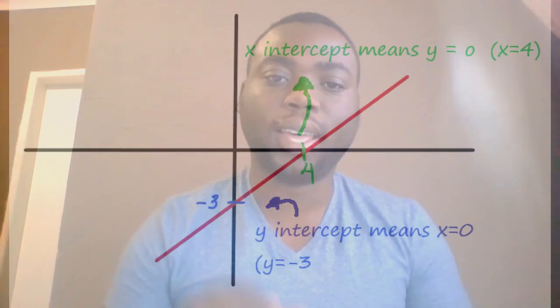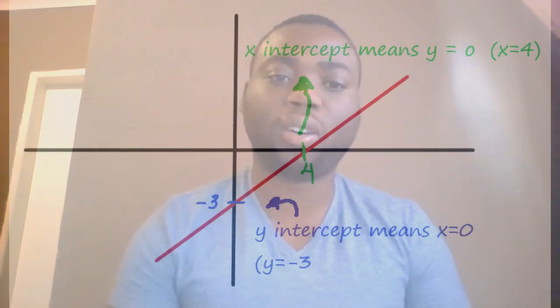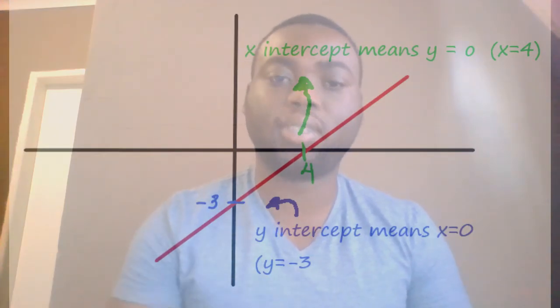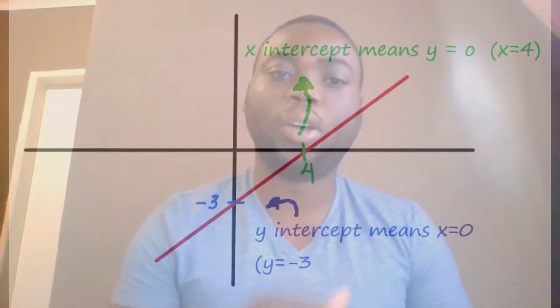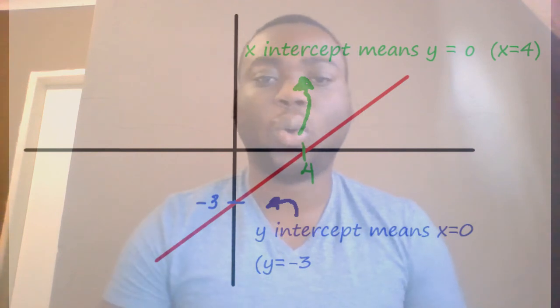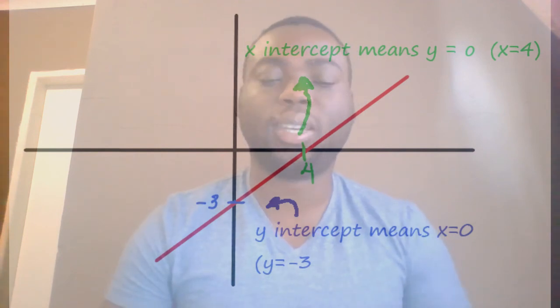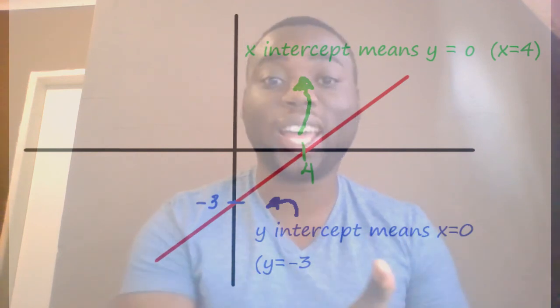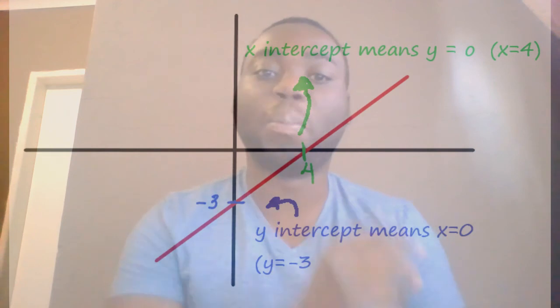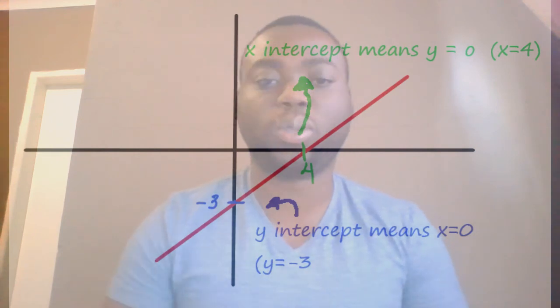Intercepts. There are two types of intercepts: the x-intercept and the y-intercept. The x-intercept literally means the point at which your graph cuts the x-axis, and at that point y is equal to zero. While the y-intercept is the point at which your graph cuts the y-axis, and at that point x is equal to zero.